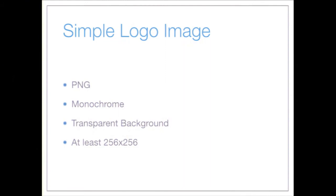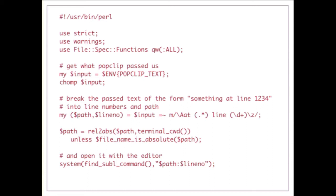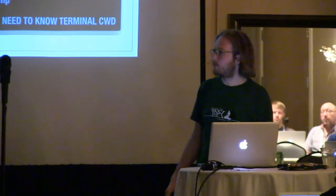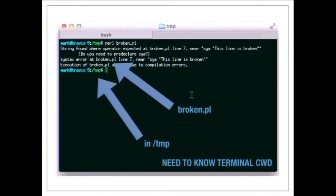The logo is just a monochrome PNG with transparent background, 256x256 or bigger. In the script, the selected text is passed in via an environment variable. I parse it with a regex to extract the path and line number, then use a 'find the symbol' command on my system that launches my editor with the path and line number argument. That's pretty much it for writing a PopClip extension — except my particular example is a bit more complicated.